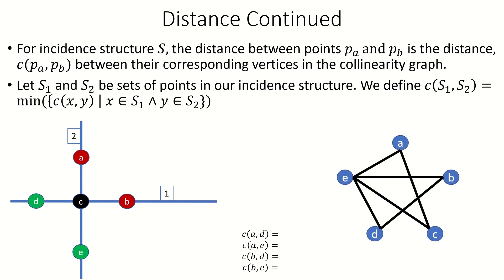Using the collinearity graph, we see that points A and D have distance 2, points A and E have distance 1, points B and D have distance 1, and points B and E have distance 1. The minimum of these values is 1, so the distance between set {A, B} and set {D, E} is 1.